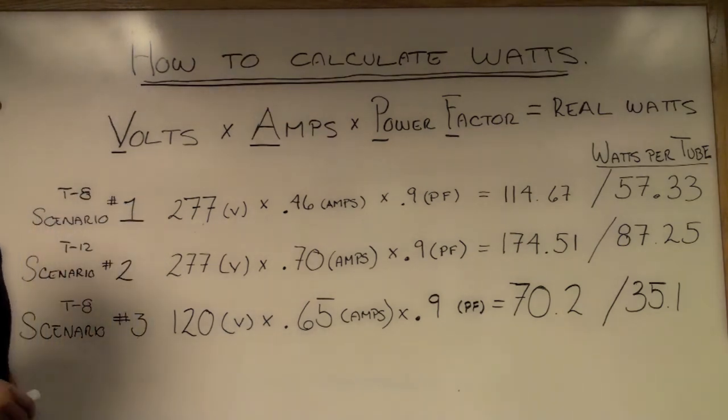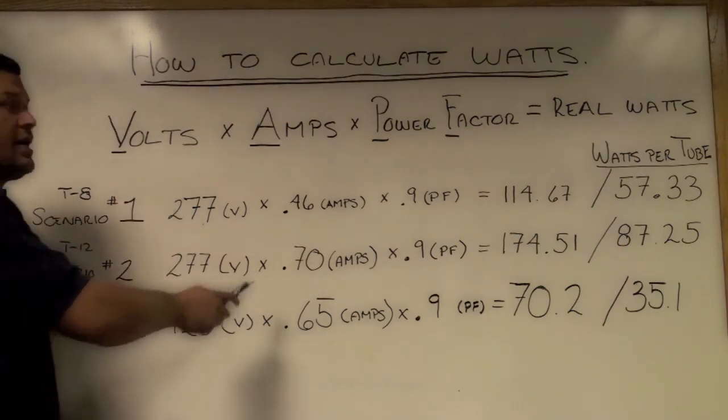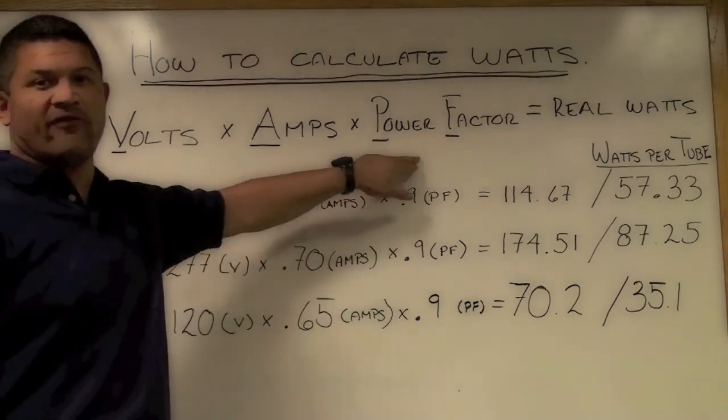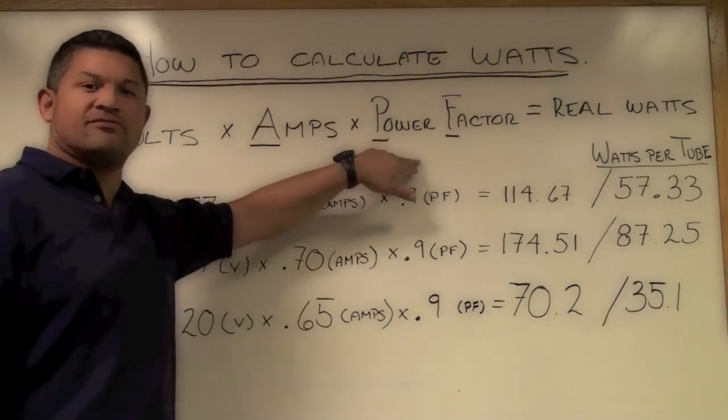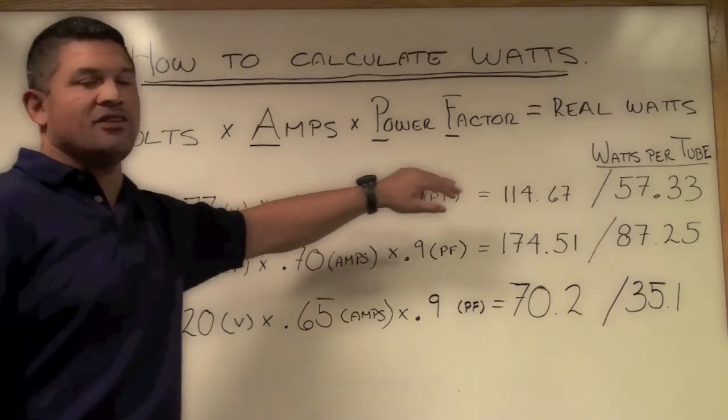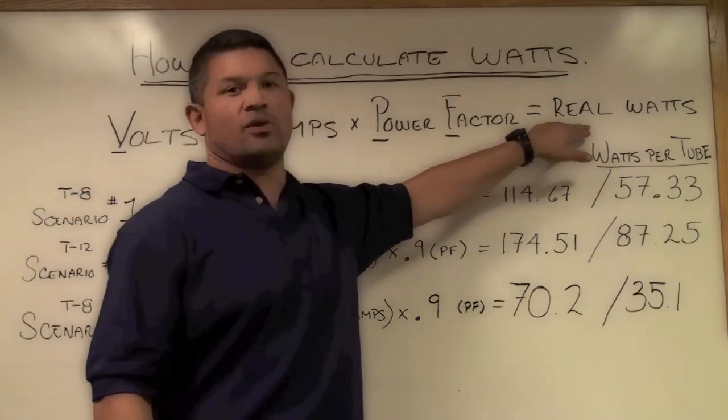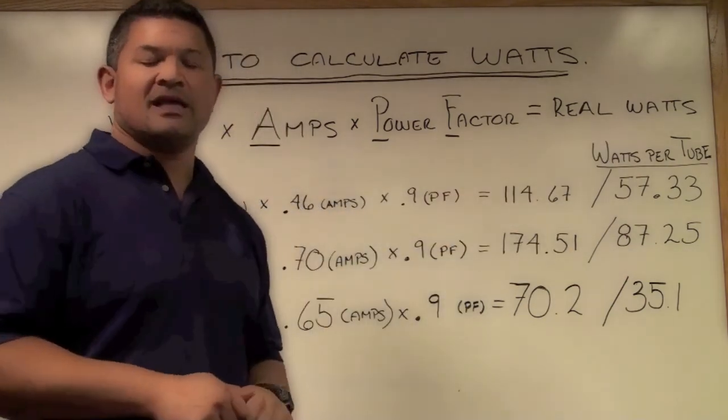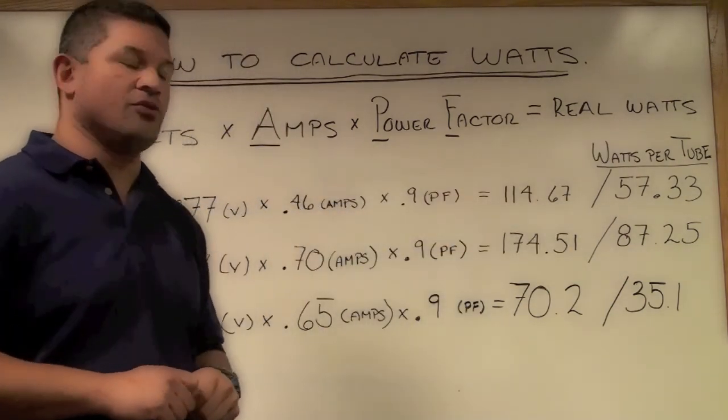What we're going to use as a calculation is volts times amps times power factor. We're going to default to 0.9 which is a commercial grade power factor. That will give you your actual watts when divided by the number of tubes or LED lights that you have in the unit.